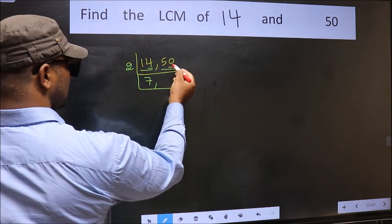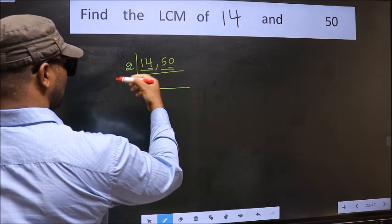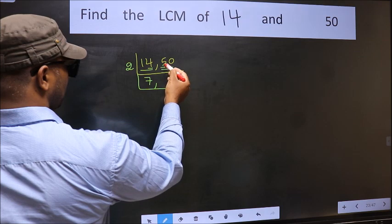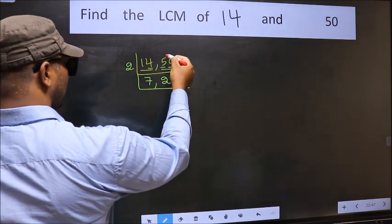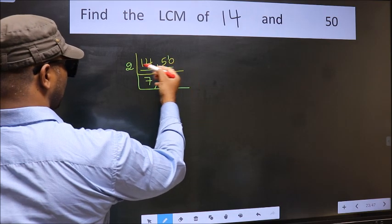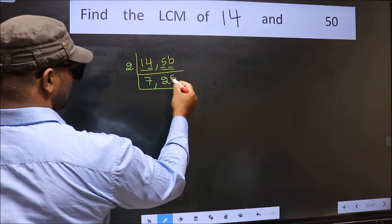The other number 50, last digit 0, so this is divisible by 2. First number 5, a number close to 5 in the 2 table is 2 times 2 is 4. 5 minus 4, 1 carried forward 10. When do we get 10 in the 2 table? 2 times 5 is 10.